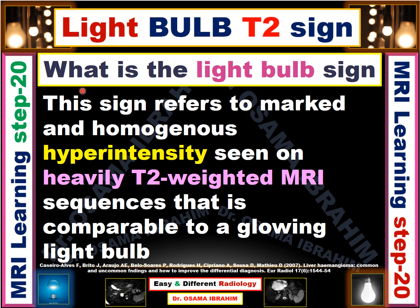Let's start with the definition of the light bulb sign in MRI. It is defined as the sign that refers to marked and homogeneous hyperintensity seen on the heavily T2-weighted MRI sequence, comparable to a glowing light bulb. We'll see this in detail in the next images.